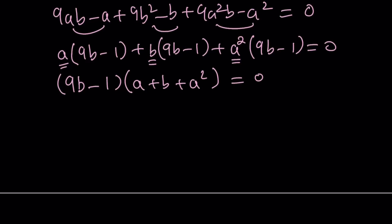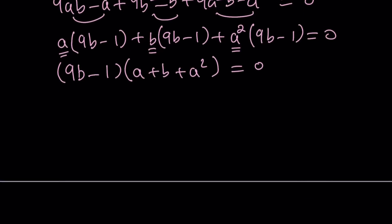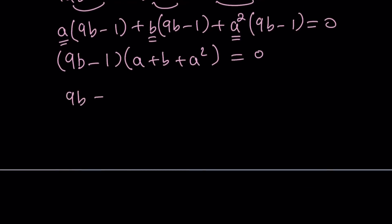So we can factor out the 9b minus 1. 9b minus 1 multiplied by each one of these a plus b plus a squared equals 0. Now the cool thing about the first method is we're not making any assumptions and obviously there are shortcuts. We'll talk about those in the second method but just brute force method you know, cross multiply everything do a little bit of substitution to make it a little easier. For example 9b minus 1 equals 0 gives us b equals 1 ninth.